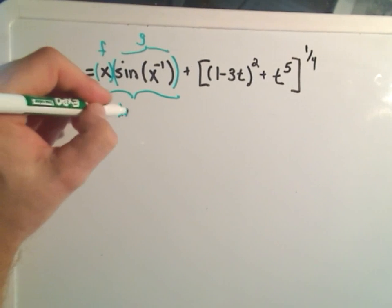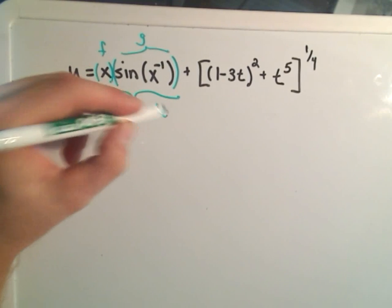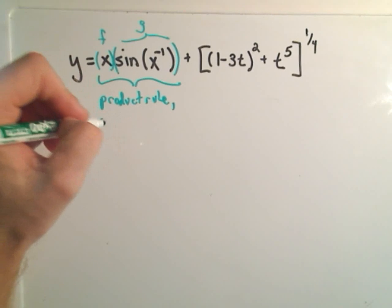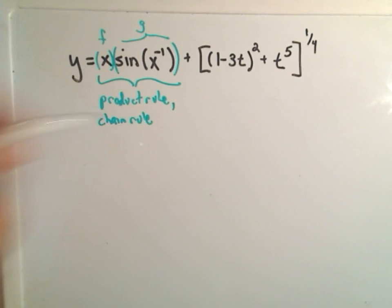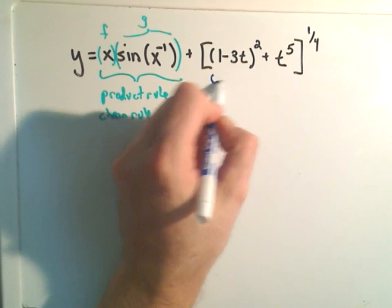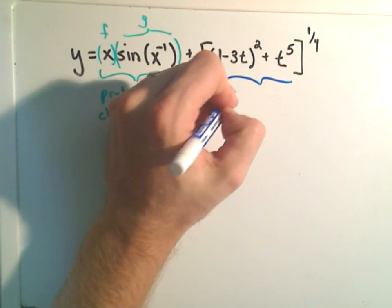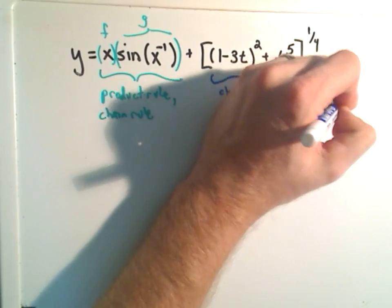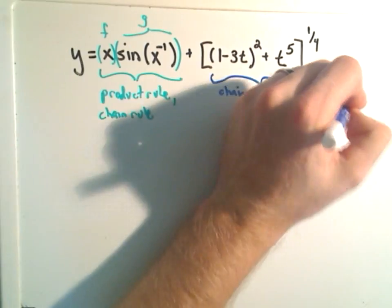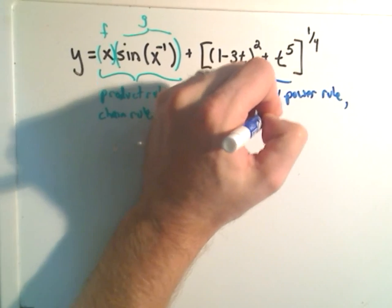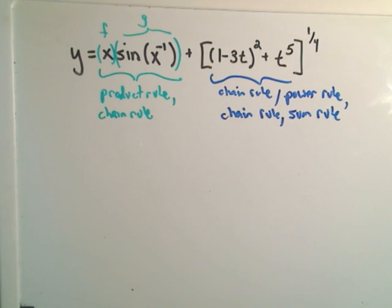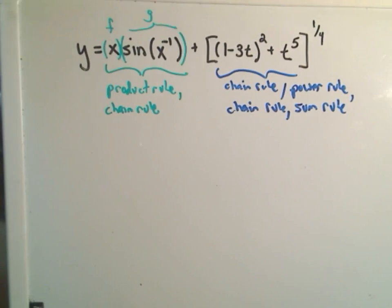And we'll have to use both the product rule, because we've got a product. And when I touch the x to the negative 1 piece, I'm also going to have to use the chain rule on that. Okay, and likewise on the other part, the first thing we'll have to use is the chain rule, the chain rule with the power rule, because the power will come out front. And then we'll deal with the stuff on the inside.